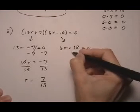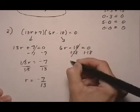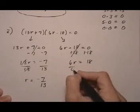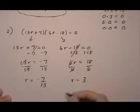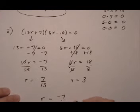Same idea for the second one. We go ahead and solve it. Add 18 on both sides. 6r equals 18. Divide by 6. r equals 3. So we would show our final answer, r is minus 7 over 13, or 3.